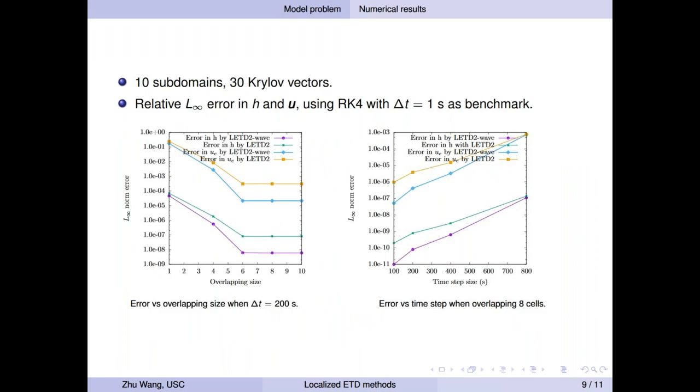Then we fix the number of subdomains to be 10 and the number of Krylov vectors to be 30. And we check the error behavior of the algorithms. In the left plot, we show you error versus overlapping size when delta t equals 100. So as overlapping size increases, the error decreases. And in particular, when overlapping size is greater than six, error stays the same. In the right plot, we show you errors versus time step size. So in general, as the time step size decreases, the error converges at the desired order.